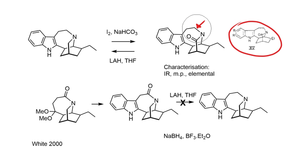Nowadays, the things we would be looking for would be some clever 2D NMR experiments — in particular, I would want to see the coupling between these protons, because that would be a very good way to tell where the oxidation had happened. If you lose the relationship between these protons, then you might be more convinced the oxidation had gone at one position rather than the other.